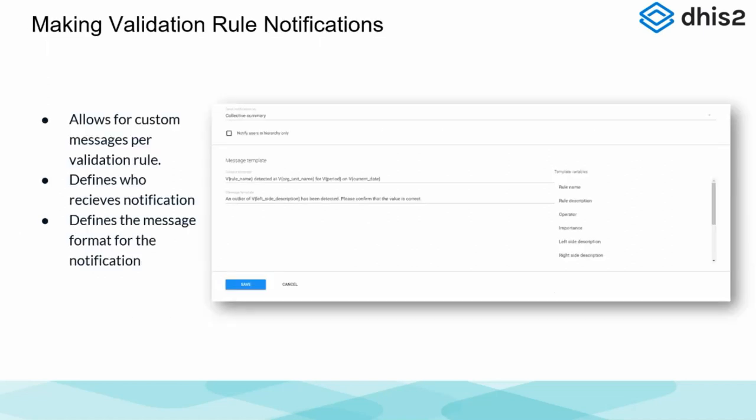We can schedule these validation rules to run routinely — daily, nightly, weekly, monthly — and then they can push notifications when they detect something. When they detect that the number of treated is higher than the number of tested, it can send an alert. This alert can be defined specifically in the validation rule notifications, which is a functionality in the data quality app. Here you can have custom subjects, messages, and templates for each one of the validation notifications.